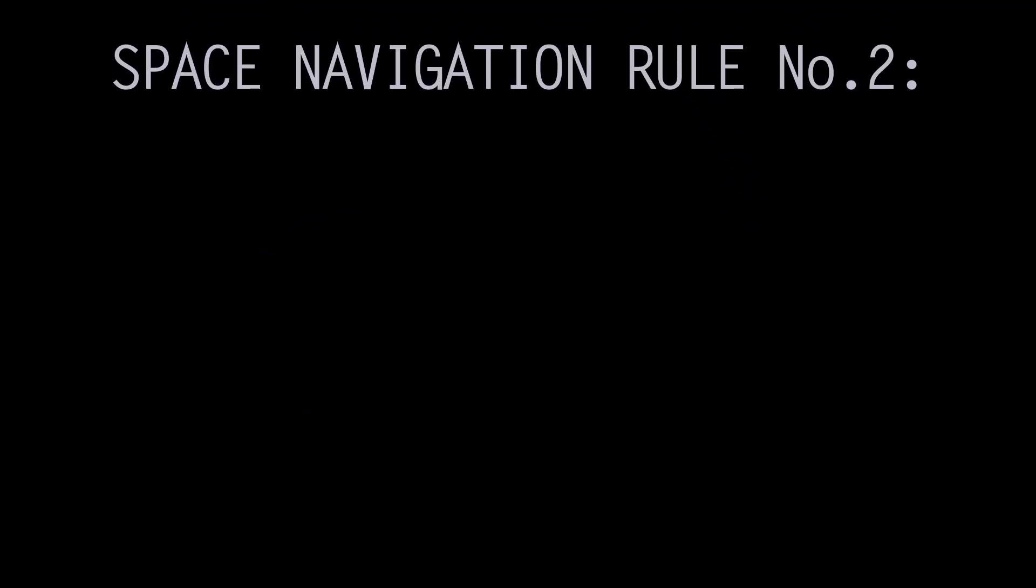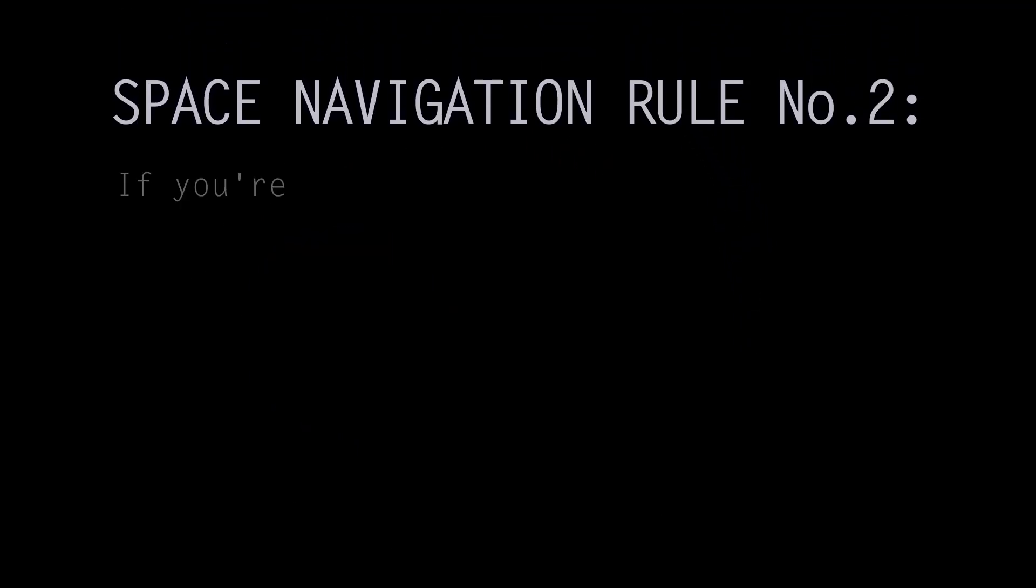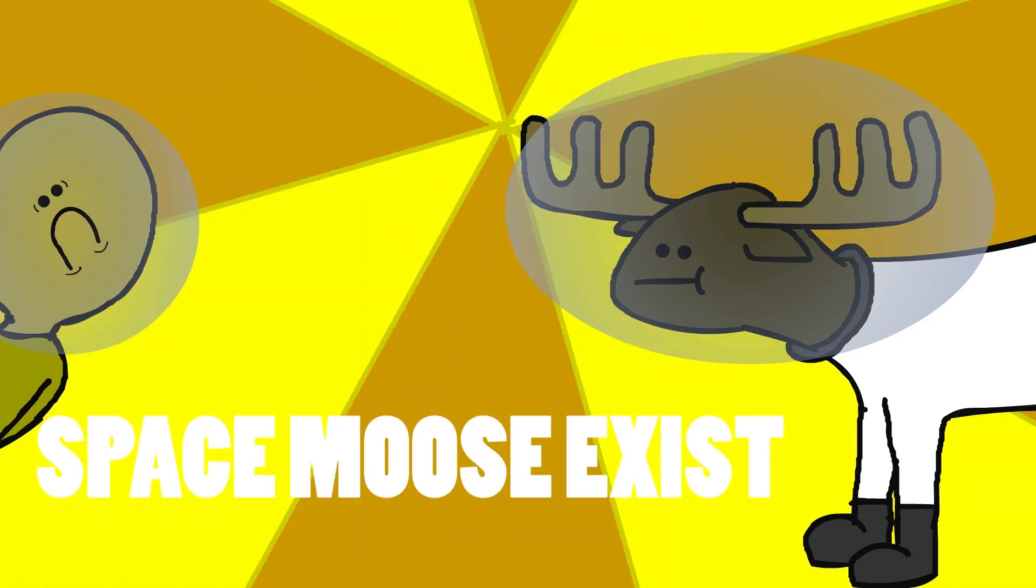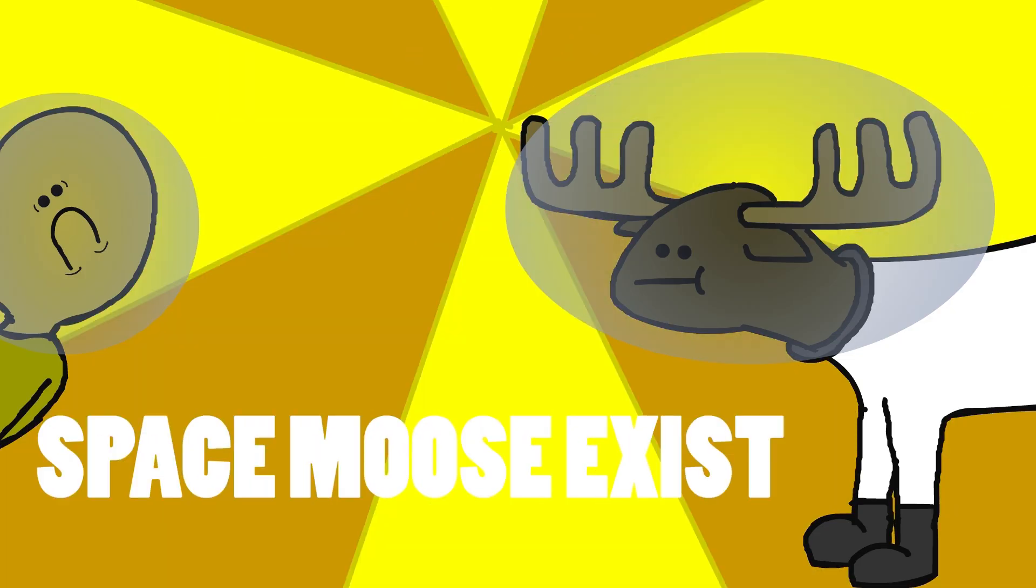What?! Space navigation rule number two. If you're going to go to space, know where you're going. If you know where you're going, know where that place will be when you get there. If not, you're either going to die or find something that would shock the world to its core. If you were alive to tell the world about it.